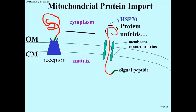When that happens, there is further interaction of the protein with another protein called Hsp70, the little black structures. Hsp70 are chaperone proteins that allow the protein produced in the cytoplasm to unfold and to cross a pore created by these membrane contact proteins.